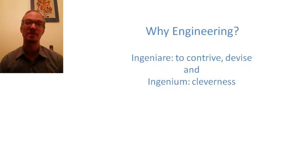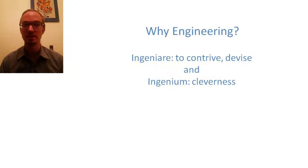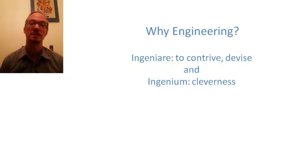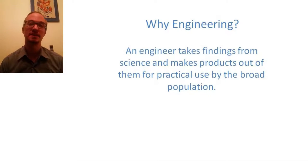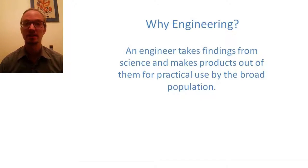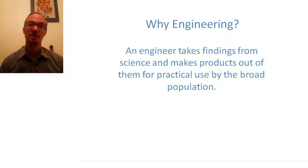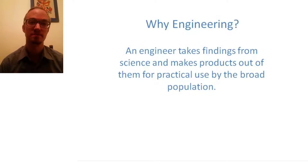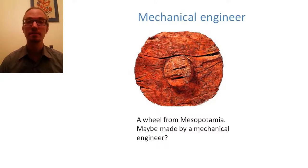Wikipedia tells us that 'engineer' comes from the Latin 'ingeniare,' meaning to contrive or devise, and 'ingenium,' meaning cleverness — so, to come up with something smart and clever. It is the engineer who comes up with applications for breathtaking new findings from science and then applies them to practical use for the population. The first engineer was probably a mechanical engineer.